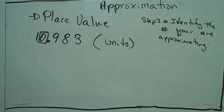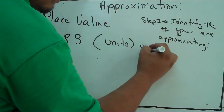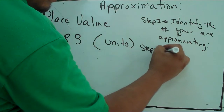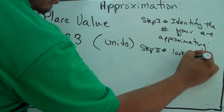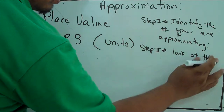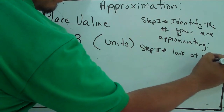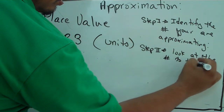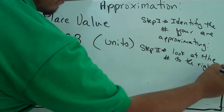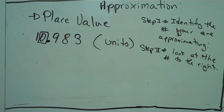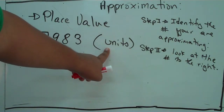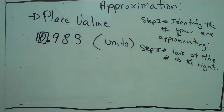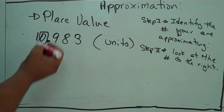Step one: identify the number you are approximating. The number we are approximating is the digit in the unit's position. Step two: look at the number to the right of the digit you have identified — the one you are approximating. In my case, the number to the right is nine.